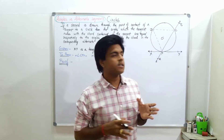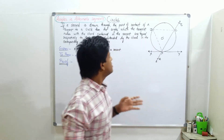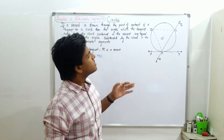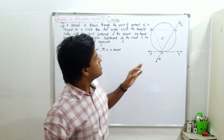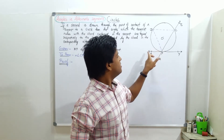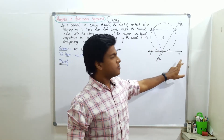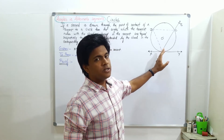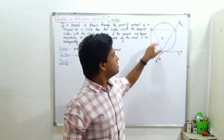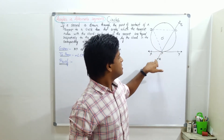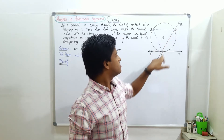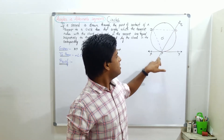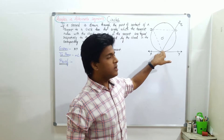So what does this theorem exactly mean? By the statement you can understand, but this theorem exactly means that if this is a tangent, and at the point of contact of this tangent with the circle, there is a secant drawn. So this is a secant.